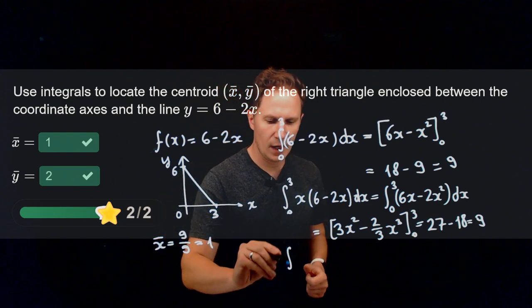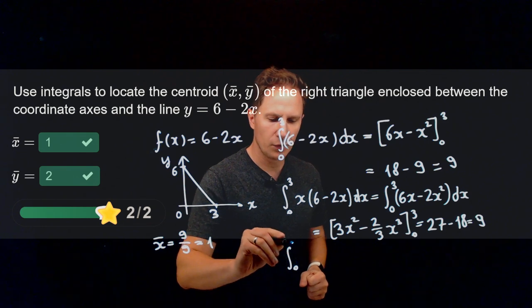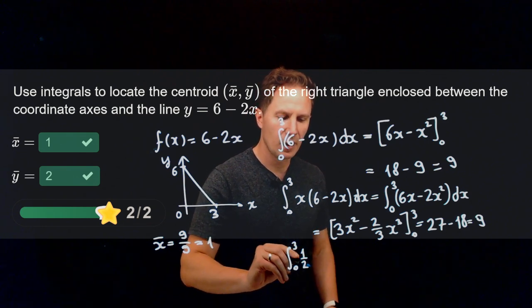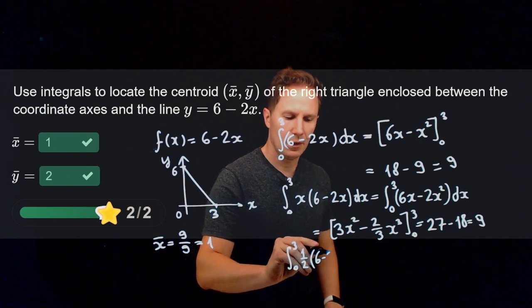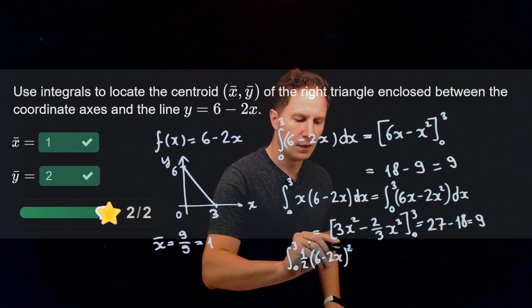Now as for the y-coordinate, we need to take the integral from 0 to 3 of half times the square of the function, so that's (6 minus 2x) squared dx.